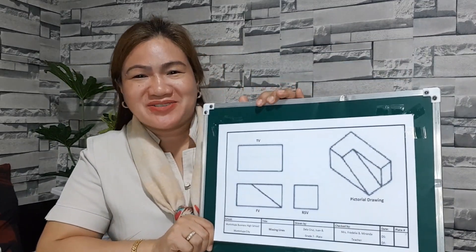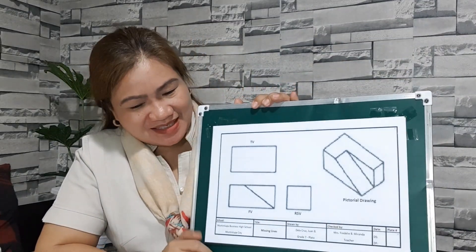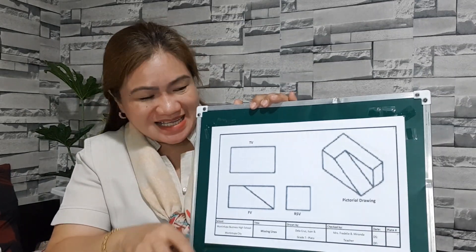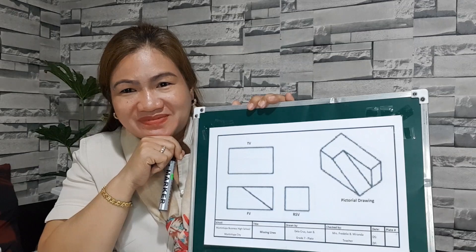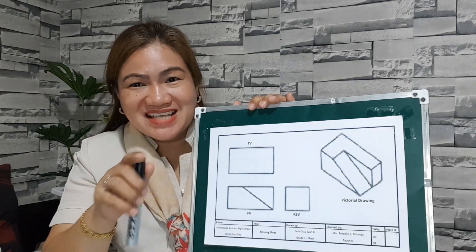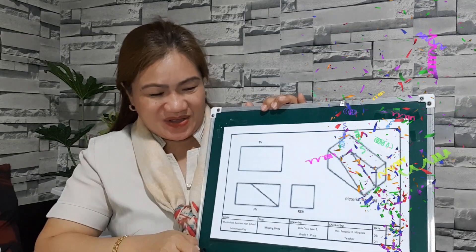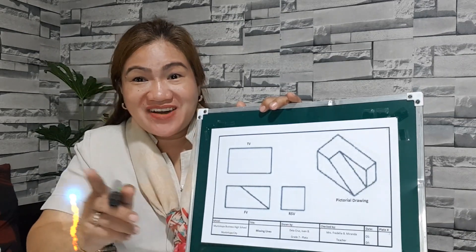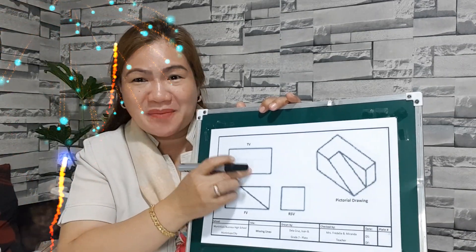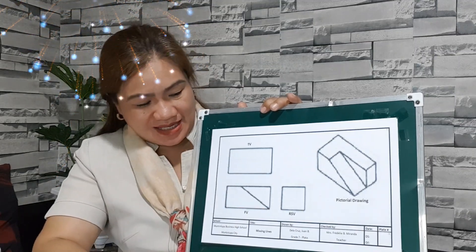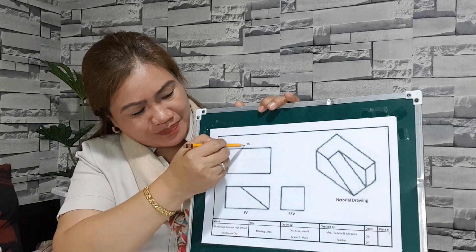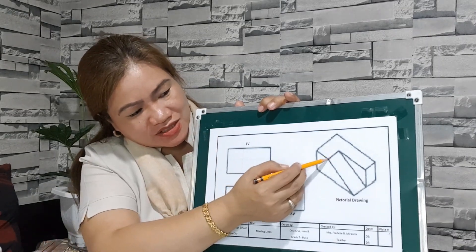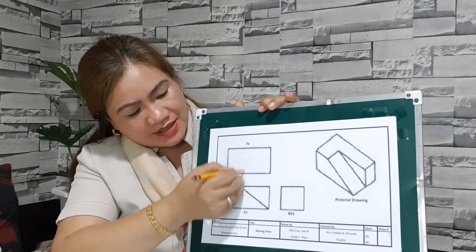You want more samples? Okay, let us try this very simple pictorial drawing. How many missing lines are there? If your answer is three, you got it right. Okay, where is the location of the missing line? Correct — that is okay, then on the top and on the right side. Okay, let us project this line up — this edge — then on the top here.